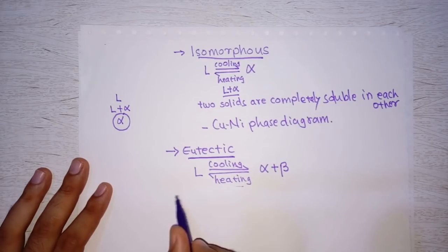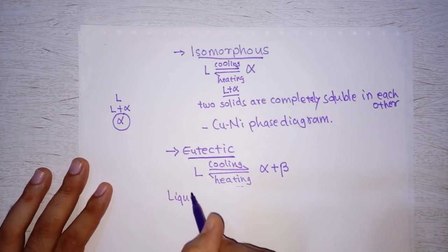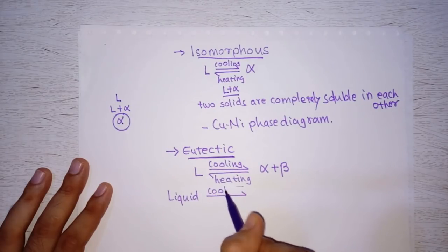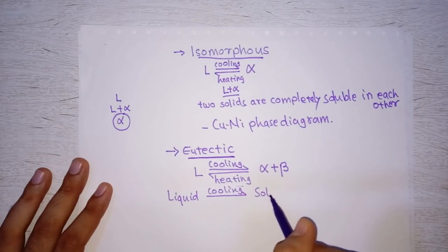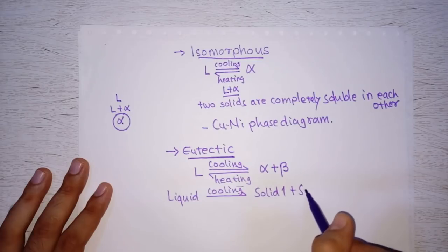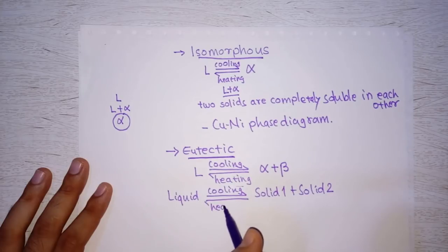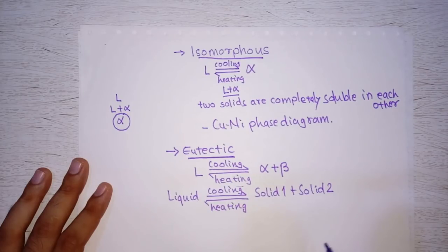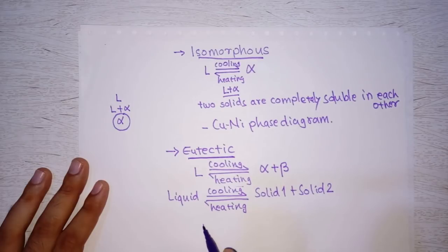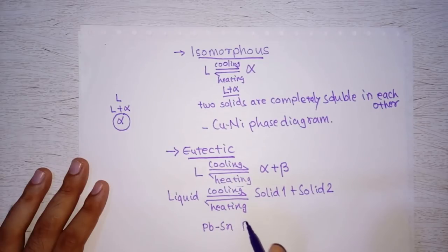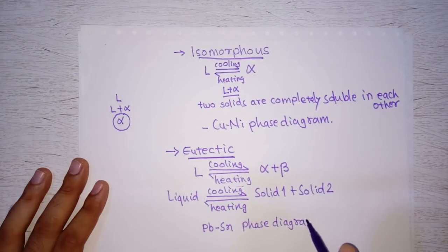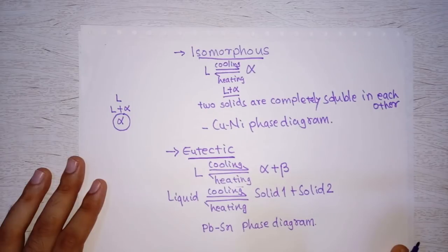In general, if we want to define a eutectic reaction, we can say: liquid on cooling gives us solid 1 plus solid 2, and the reverse is also true. The example of a eutectic phase diagram is the lead-tin phase diagram.